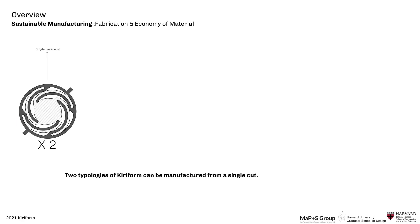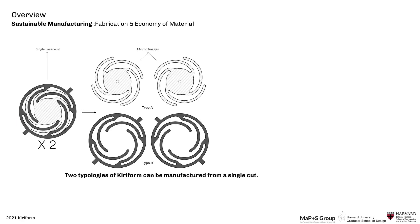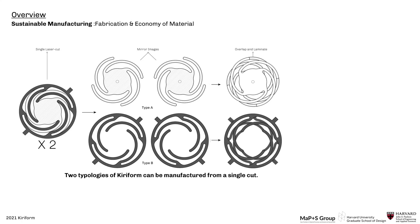Kiriform is manufactured out of flat sheets of elastic material with simple fabrication techniques. It is fast to assemble and requires minimal hardware making it cheap to manufacture.